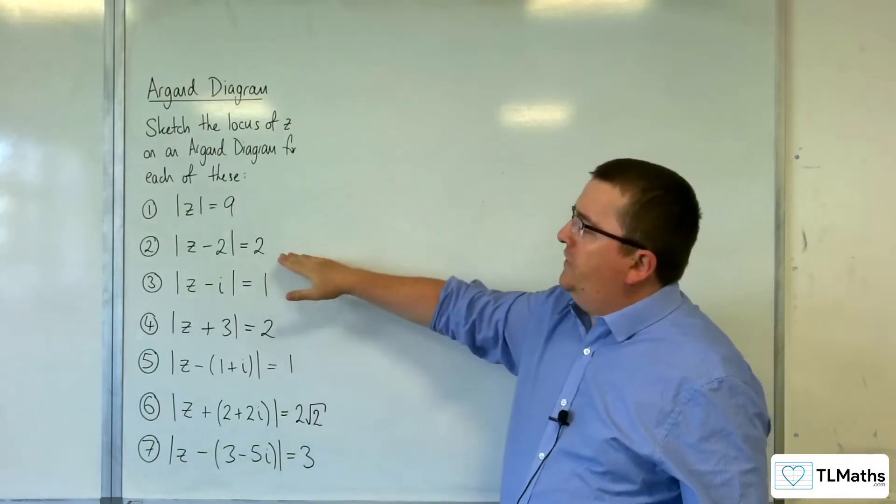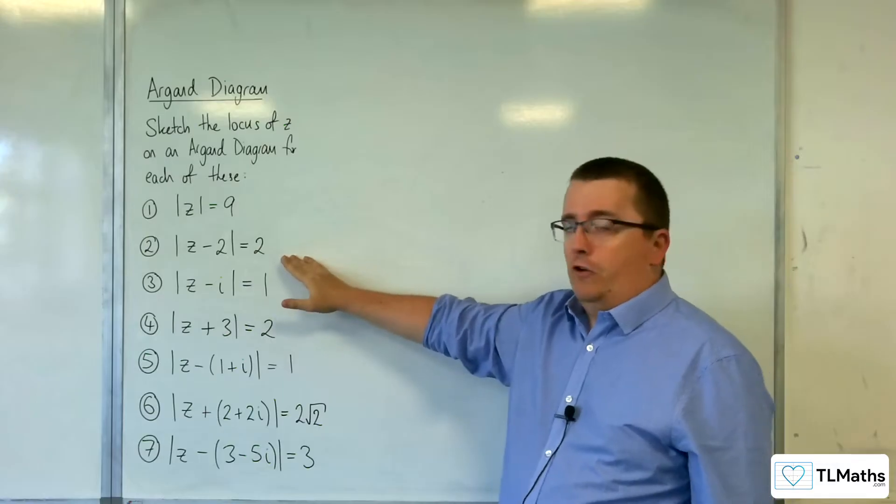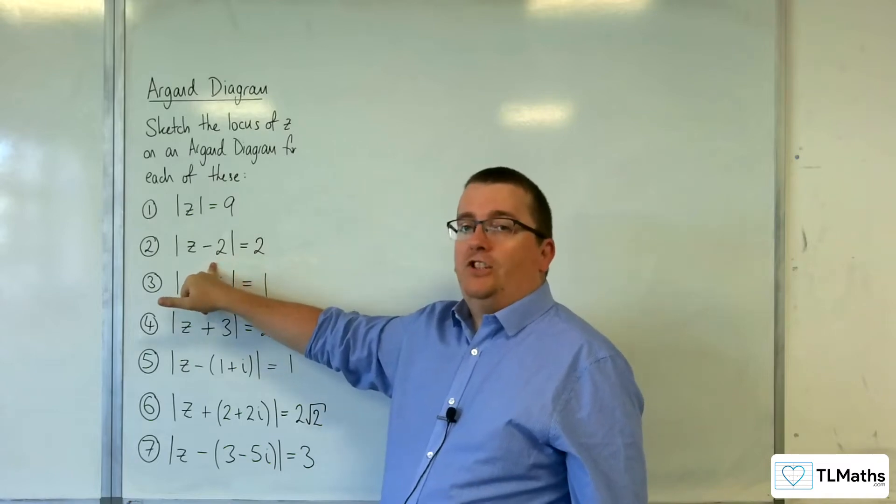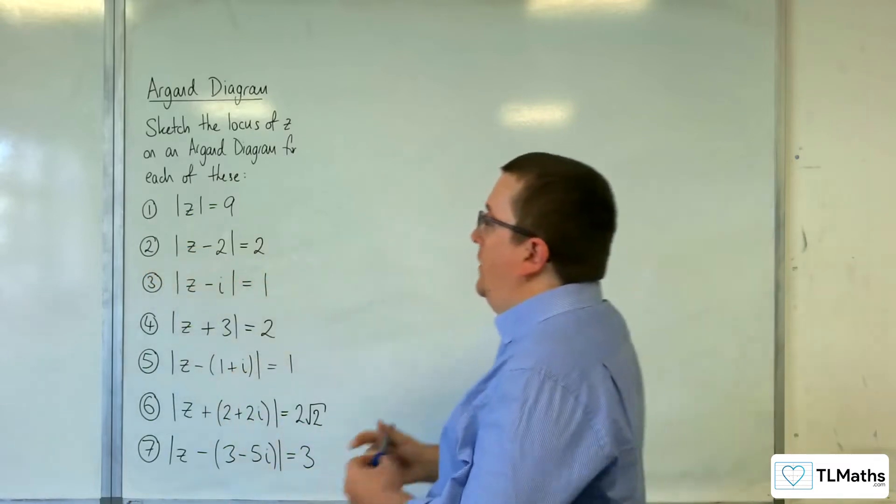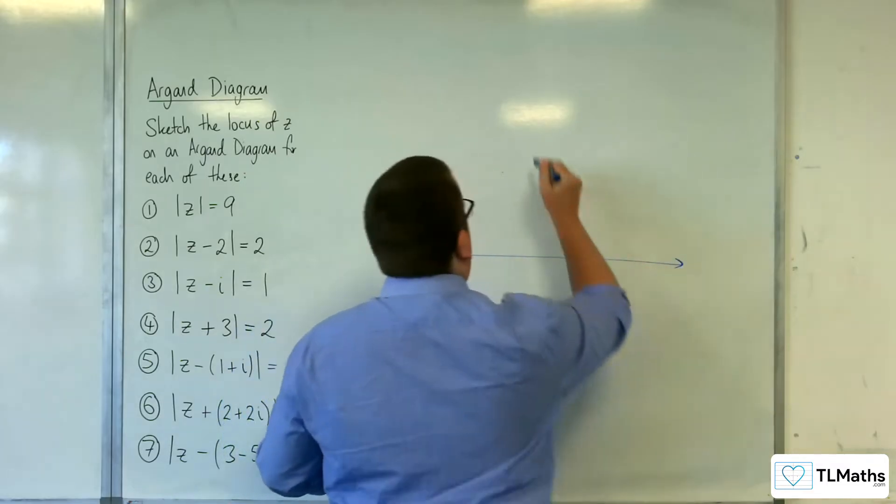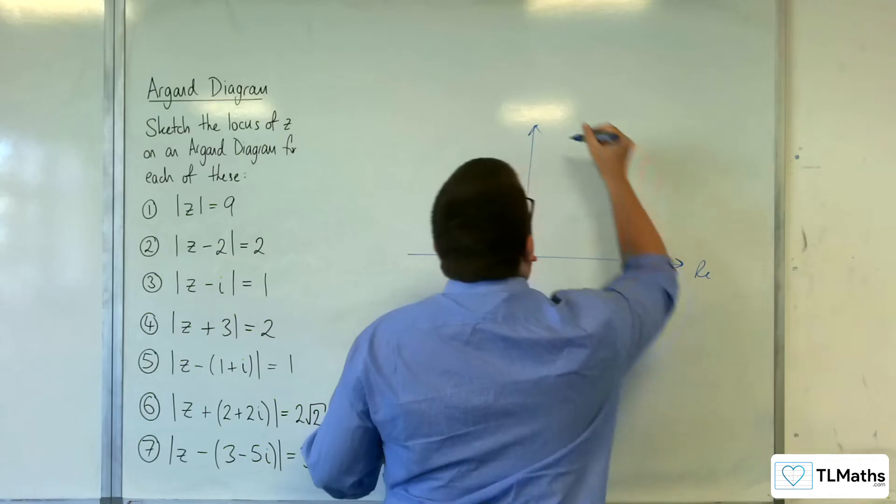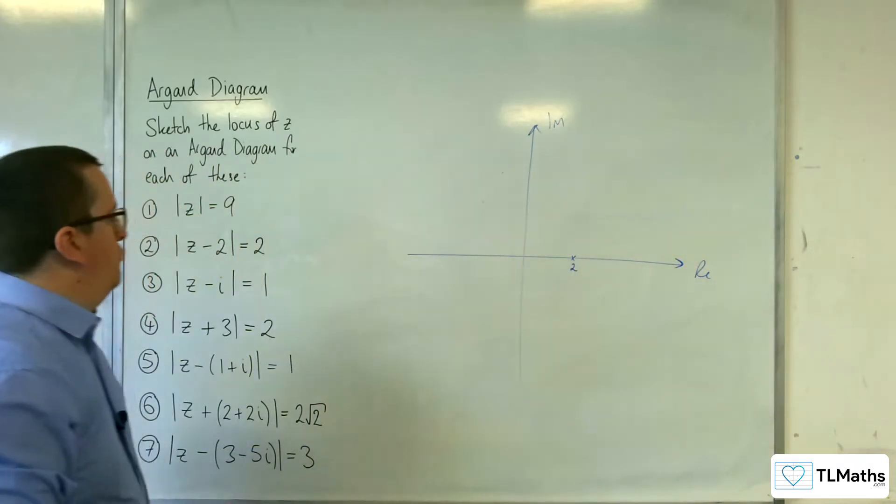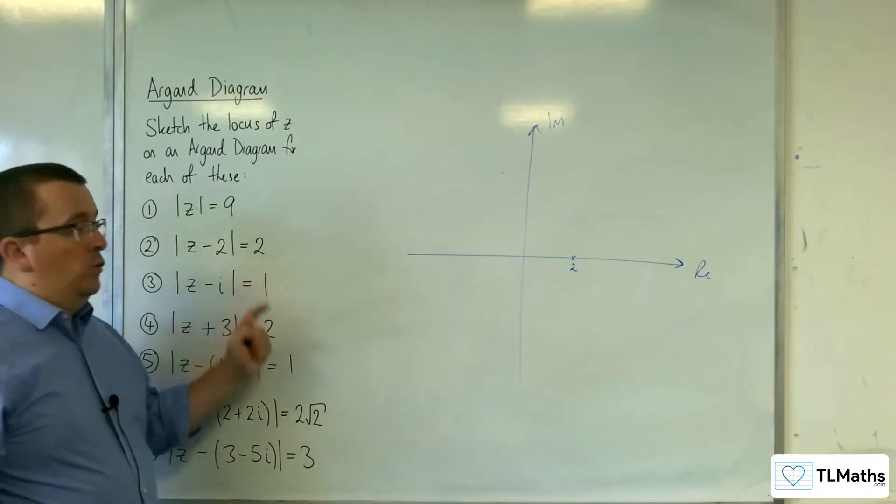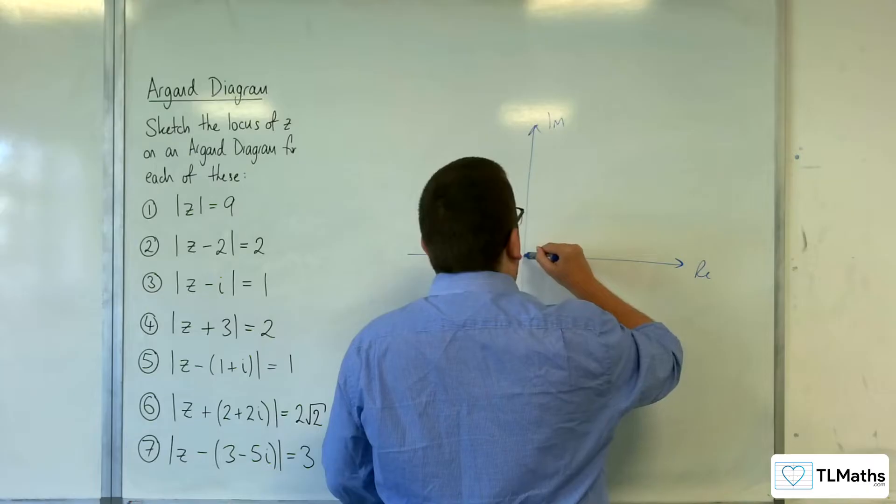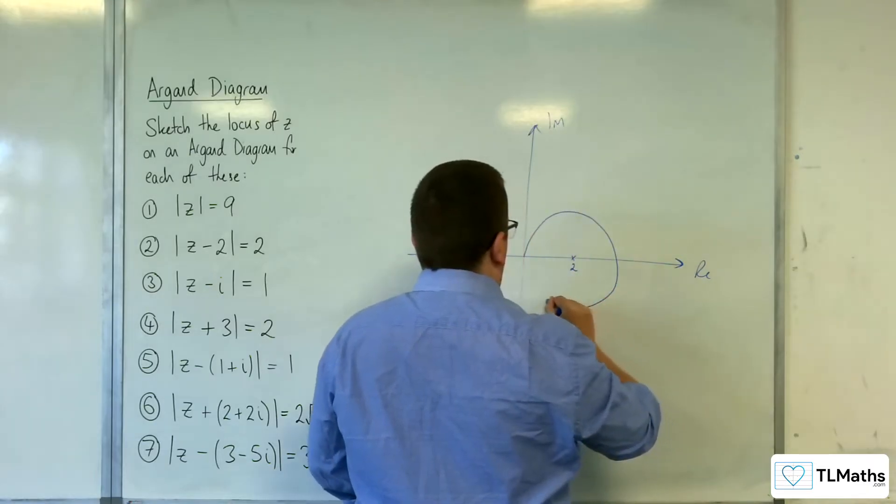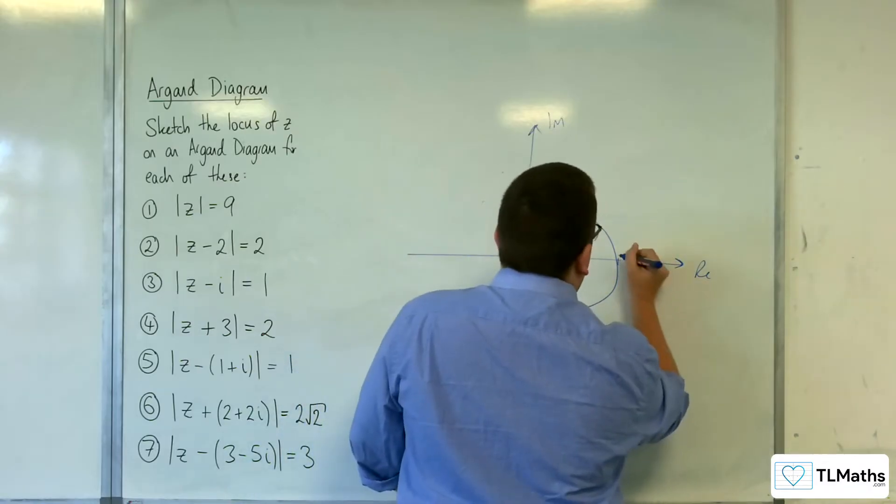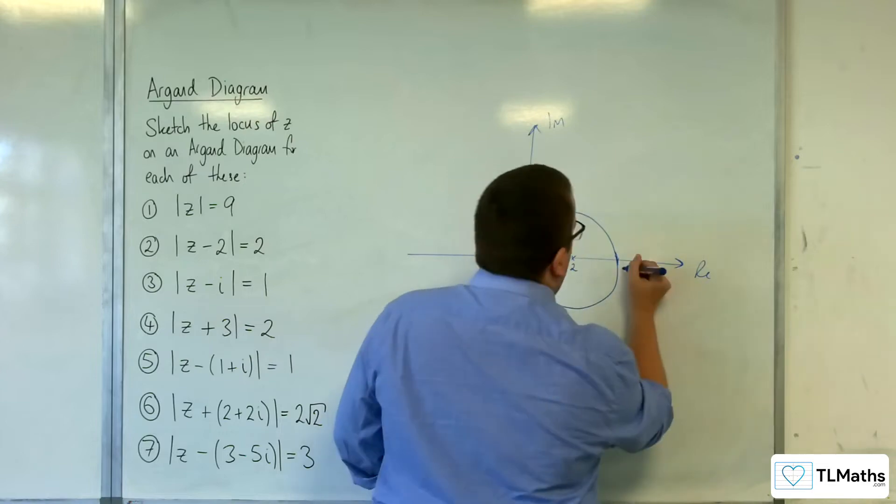Second one. z take away 2 is equal to 2. So this one isn't centred at the origin. You can see that because you've got this z take away 2, that means it's going to be centred at 2, 0 on the real axis. It's got a radius of 2, so that means the circle does something like this. It's going through the origin. This point, if I drew it well enough, would be 4.